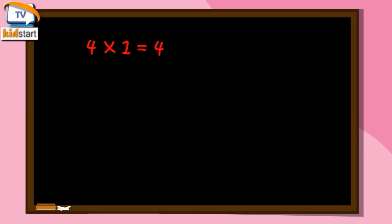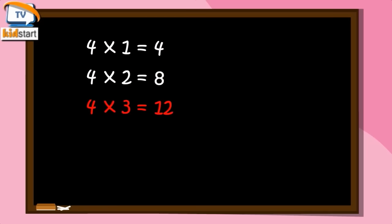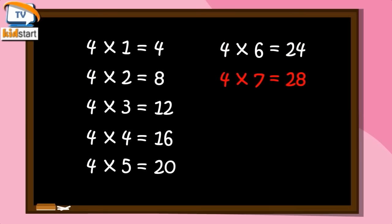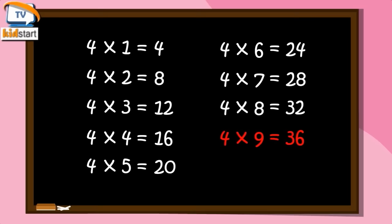Four ones are four. Four twos are eight. Four threes are twelve. Four fours are sixteen. Four fives are twenty. Four sixes are twenty-four. Four sevens are twenty-eight. Four eights are thirty-two. Four nines are thirty-six. Four tens are forty.